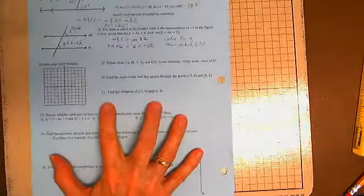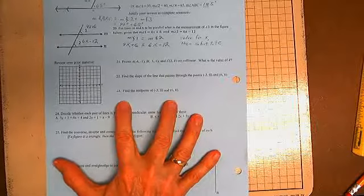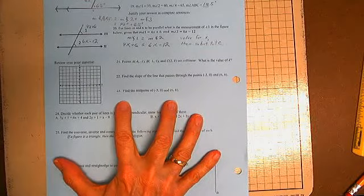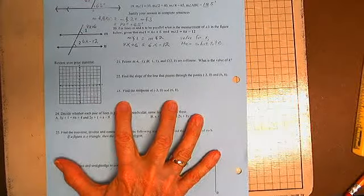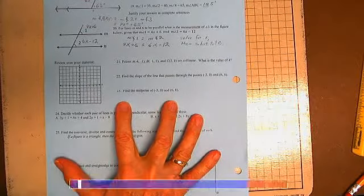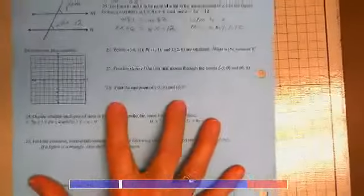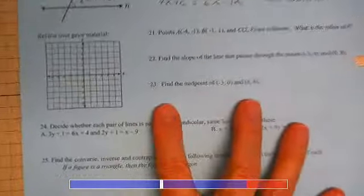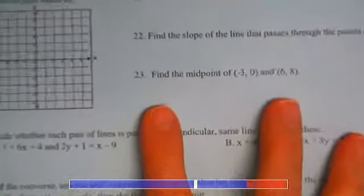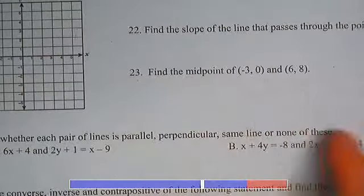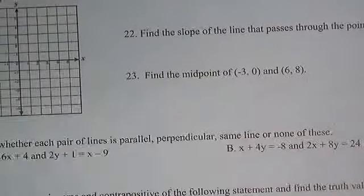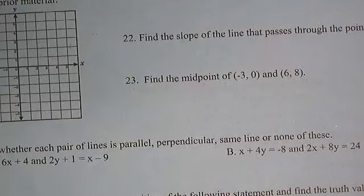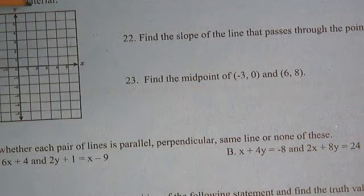Problem 23: find the midpoint of negative 3, 0 and 6, 8.